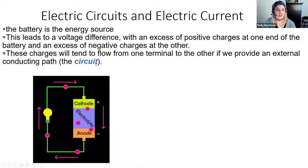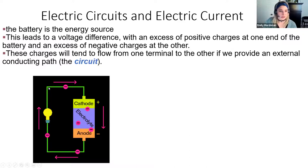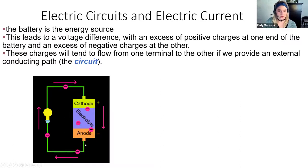There's nowhere for the charges to flow inside the battery until I connect it to an external conducting path. Once connected, as shown by the green wire, the negative charges on the anode now have a path to flow through. They can't go back through the electrolyte, but they can flow through the wire, hit circuit elements like light bulbs, and then reach the cathode — the positive end — where they want to be. Then the whole cycle starts over.